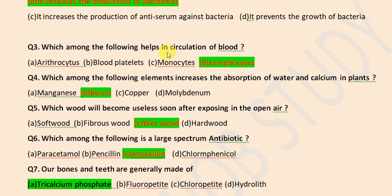Which among the following helps in circulation of blood? It is lymphocytes. And which among the following elements increase the absorption of water and calcium in plants? It is boron.